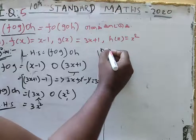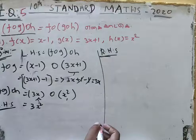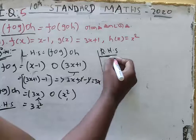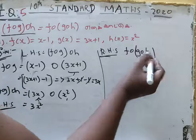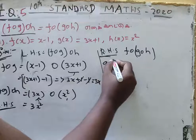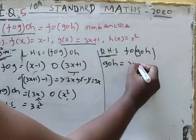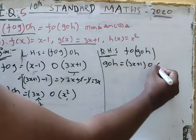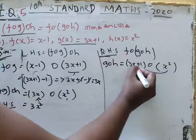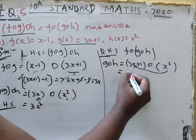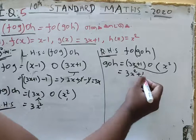Now, RHS can be done. Here we evaluate f of g of h. First, g of h can be done — g is evaluated now. g of x is 3x plus 1, and x is replaced by the actual evaluated value x squared, giving 3x squared plus 1.